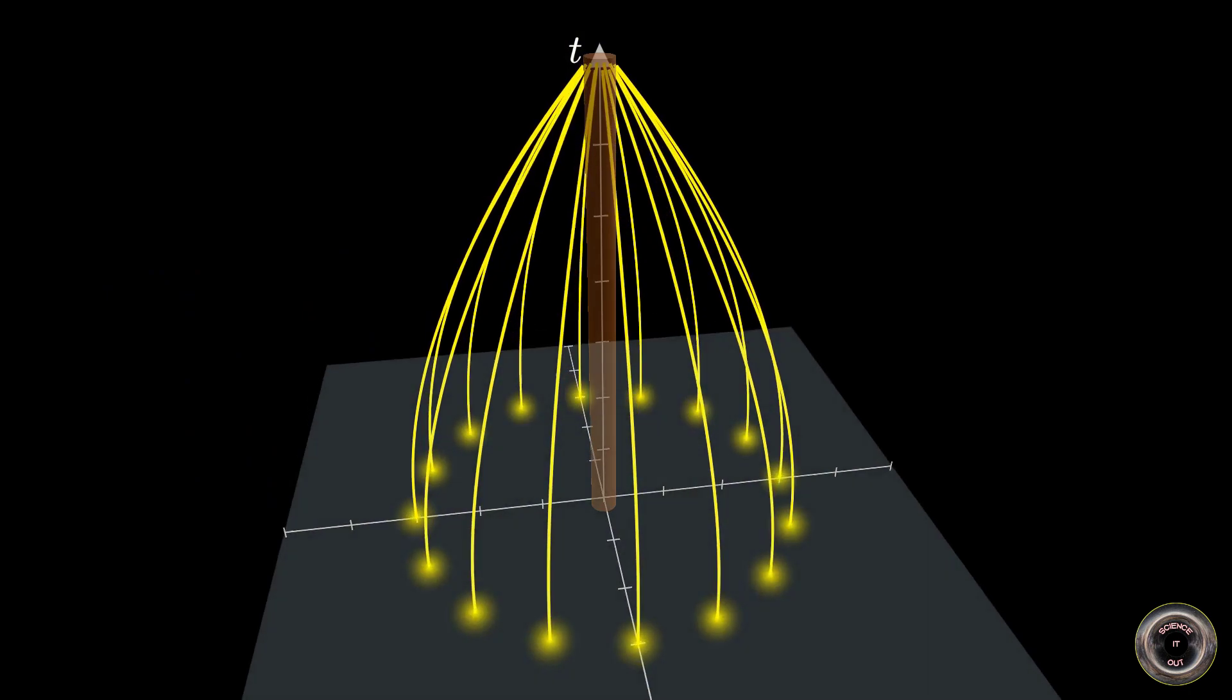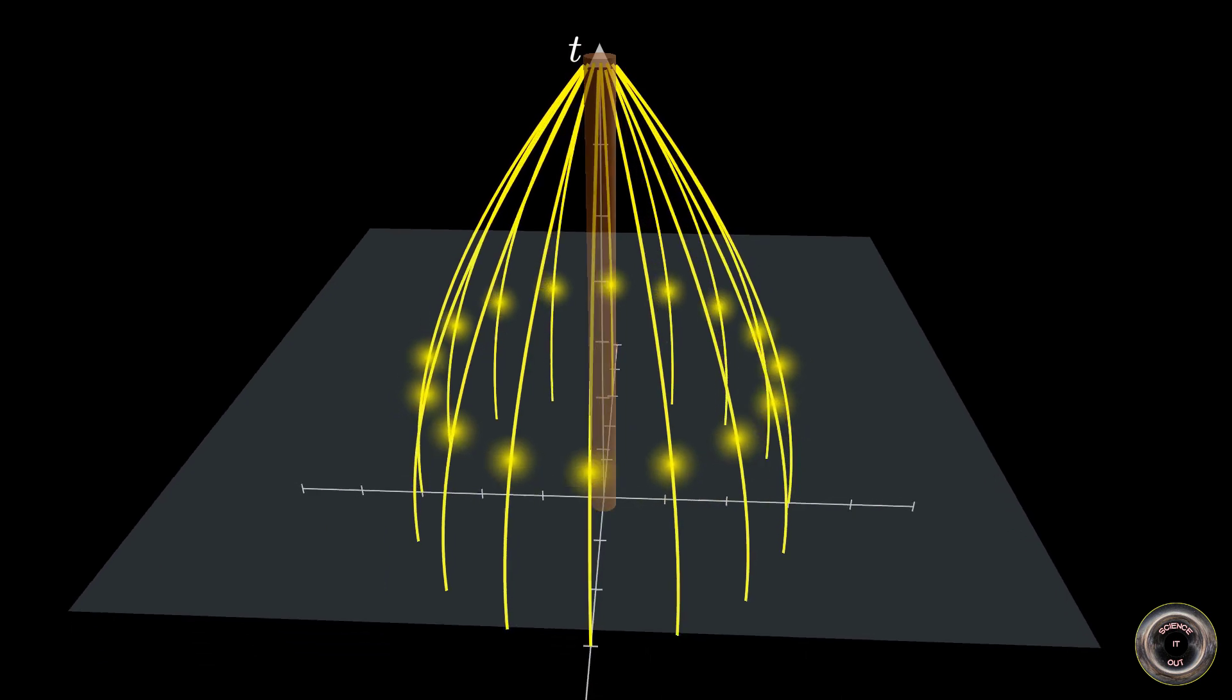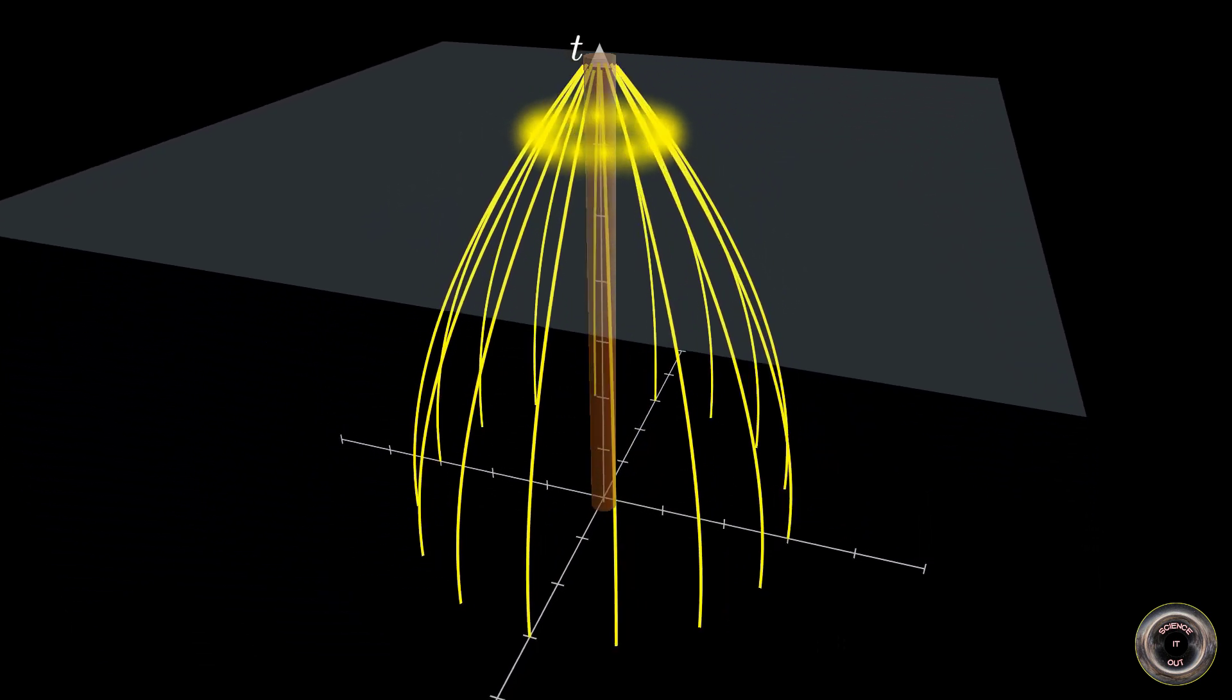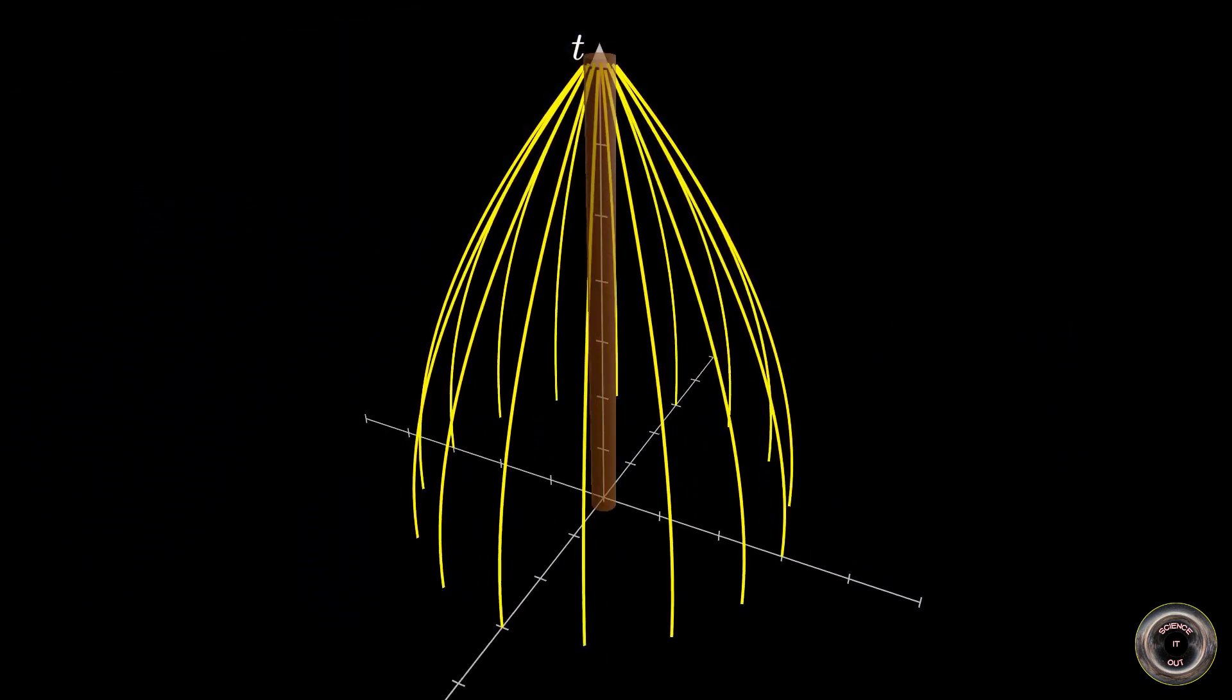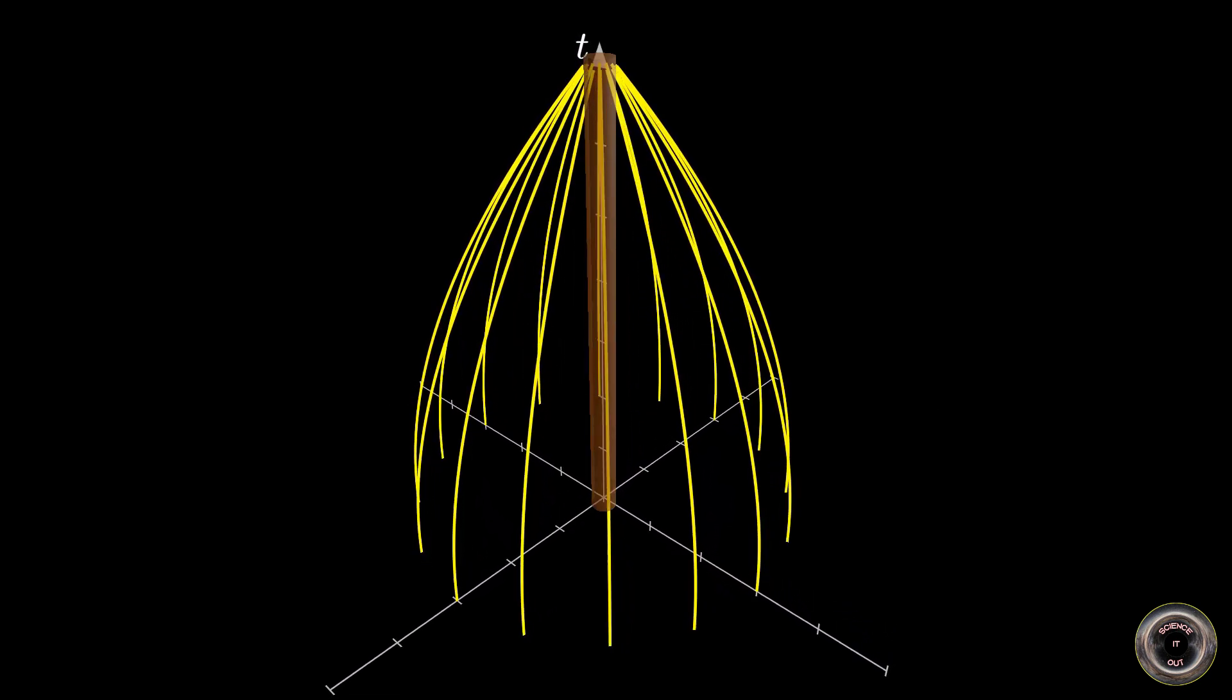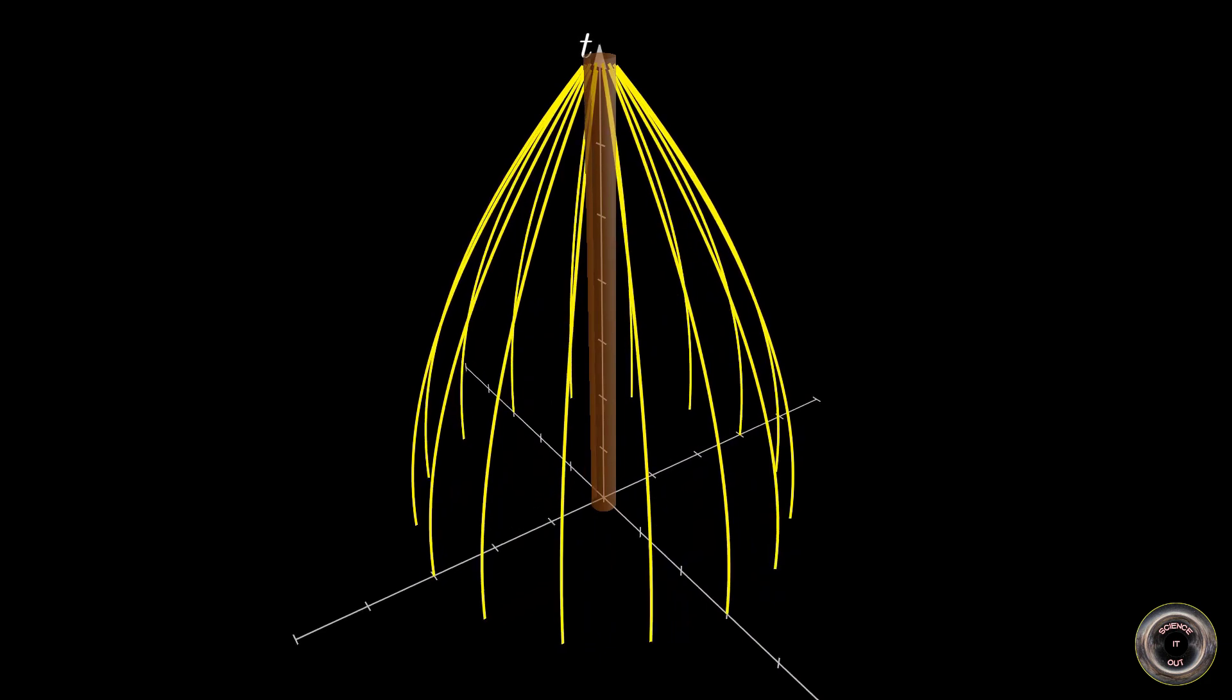In other words, the presence of mass curves spacetime in such a way that geodesics which start out parallel will begin converging. And that is how mass attracts mass within general relativity. There is no force, spacetime is just distorted so that geodesics converge.